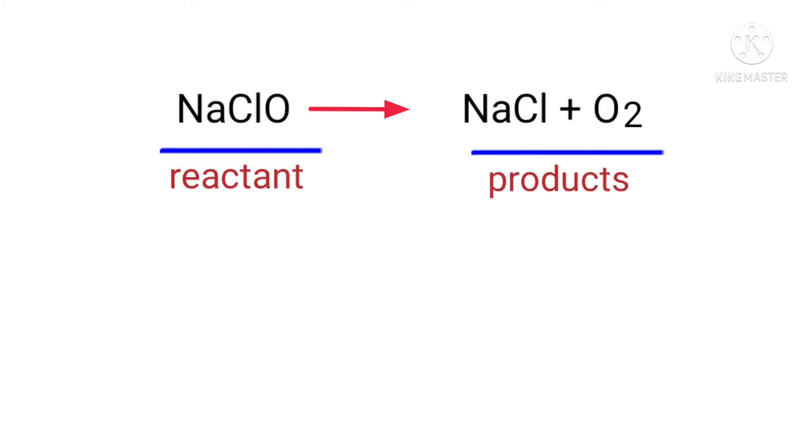In this equation the reactant is sodium hypochlorite and the products are sodium chloride and oxygen. If you look at this equation, the equation is not balanced.